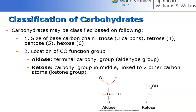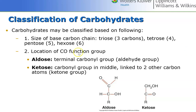There are aldoses and ketoses — two types of these simple carbohydrates. The aldose has a terminal carbonyl group, which would be the aldehyde group. The ketose has the carbonyl group in the middle between two different carbon chains. So the carbonyl group is at the end for an aldose and in the middle for a ketose. The size: a triose has three carbons, a tetrose has four, a pentose has five, and a hexose has six carbons.